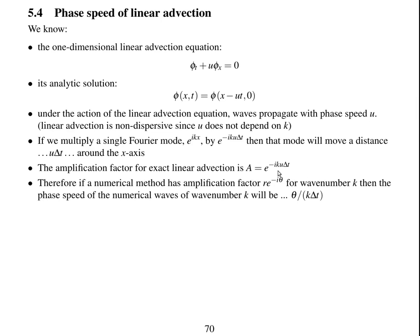So we know that if you multiply the wave by this value, it will move a distance u delta t and the phase speed is u. So if you multiply it by theta, then the distance moved is going to be theta divided by k delta t.